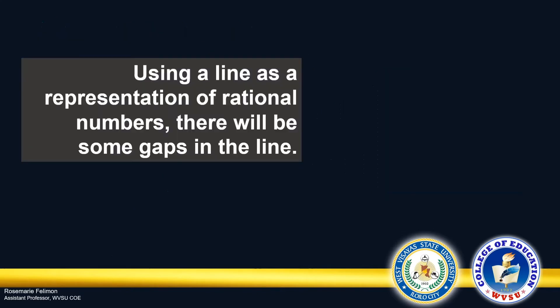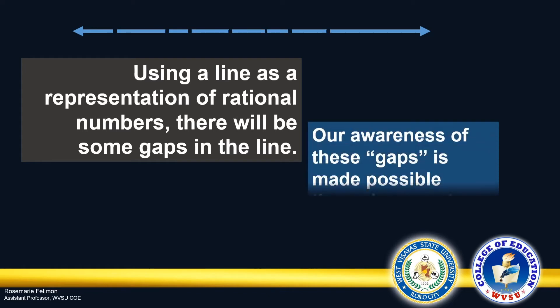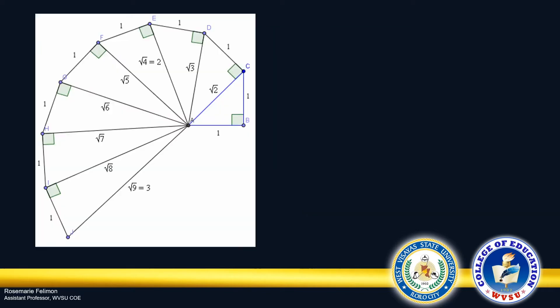We can think of a geometric representation of the rational numbers by using a line, but for sure there will be gaps in the line. Our awareness of these gaps may be made possible through geometry. Let's take a look at this illustration.